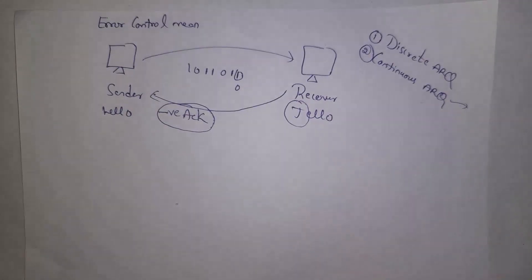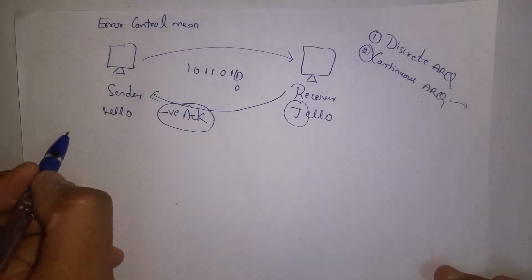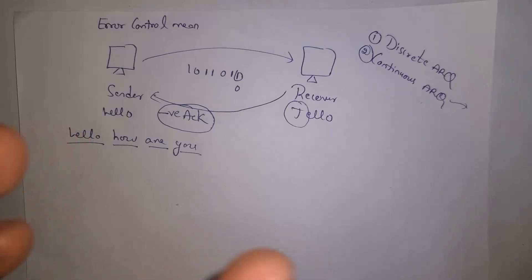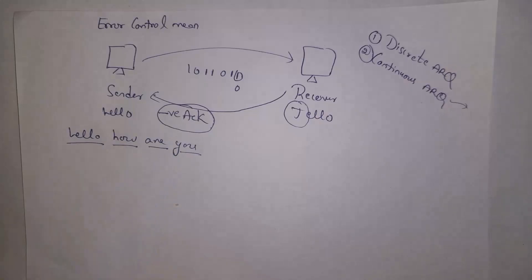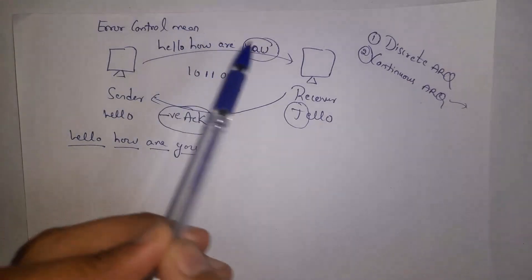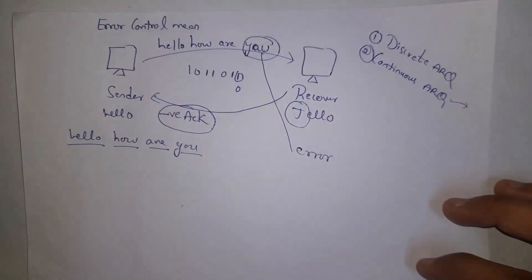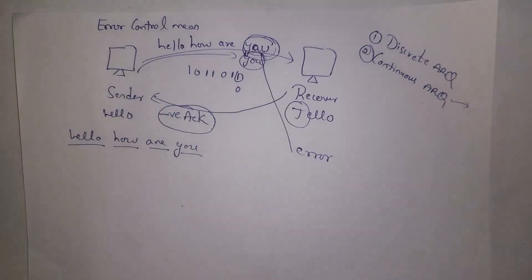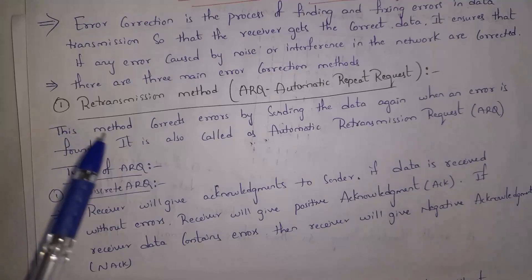In Continuous ARQ, the complete data is divided into parts and each part is transferred to the receiver. For example, 'hello how are you' is split: 'hello' is one part, 'how' is one part, 'are' is one part, and 'you' is one part. All parts are continuously transferred to the receiver. If a receiver receives an error in one part, it asks the sender to resend only that erroneous part. The receiver then reconstructs the full message.